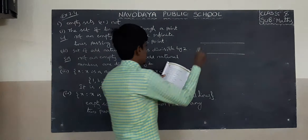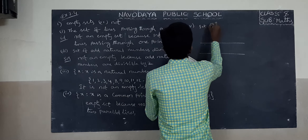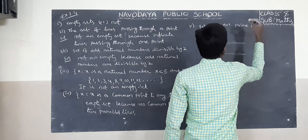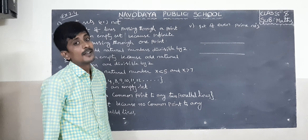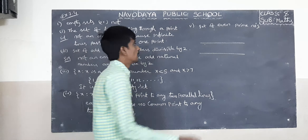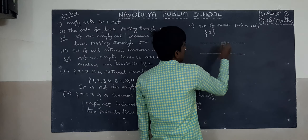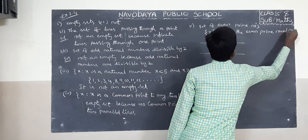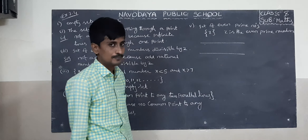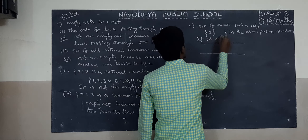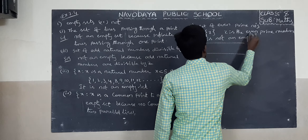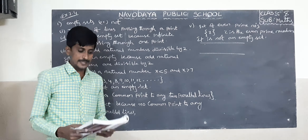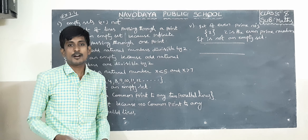Last one, fifth: the set of even prime numbers. What are the even prime numbers? Only 2 is the even prime number. So it contains only the singleton element 2. That is why it is not an empty set. Thank you, tomorrow we will discuss exercise 2.4 further.